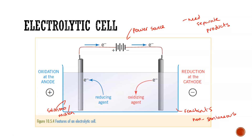The ions need to be either in solution or molten so they can conduct electricity — remember ionic substances don't conduct in the solid state. Electrons move out of the anode where oxidation still occurs; the reducing agent is attracted to the anode and oxidation occurs there. But this time the electrons are being drawn out, making the anode positive — it is connected to the positive terminal of the battery.